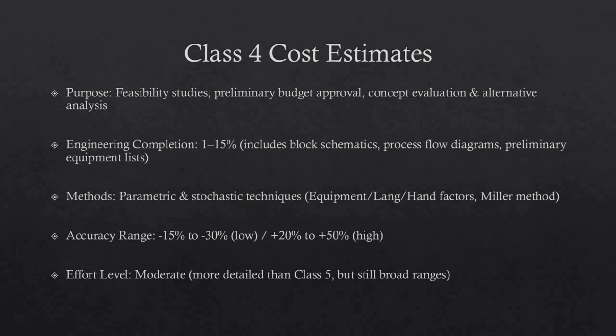Class 4 estimate purposes include alternative scheme analysis, confirmation of economic and/or technical feasibility, and preliminary budget approval or approval to proceed to the next stage. Class 4 estimates virtually always use stochastic estimating methods such as equipment factors, Lang factors, Hand factors, Chilton factors, Peters-Timmerhaus factors, Guthrie factors, the Miller method, gross unit cost ratios, and other parametric and modeling techniques. Typical accuracy ranges are minus 15% to minus 30% on the low side and plus 20% to plus 50% on the high side. Ranges could exceed those shown in unusual circumstances.